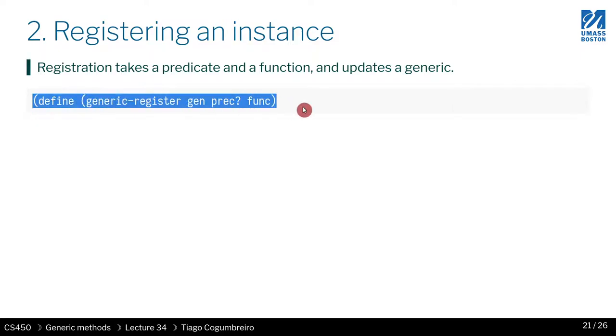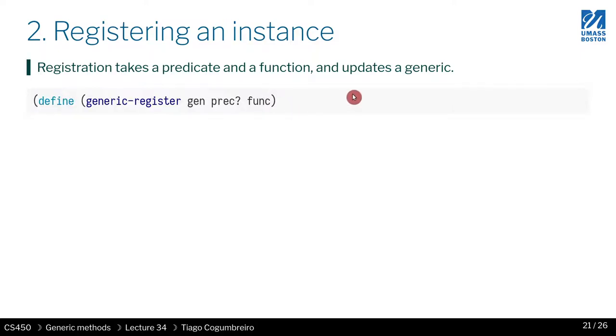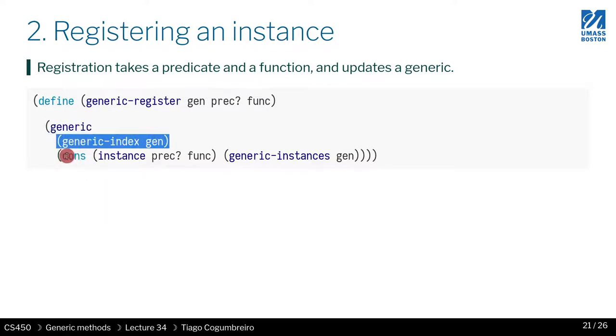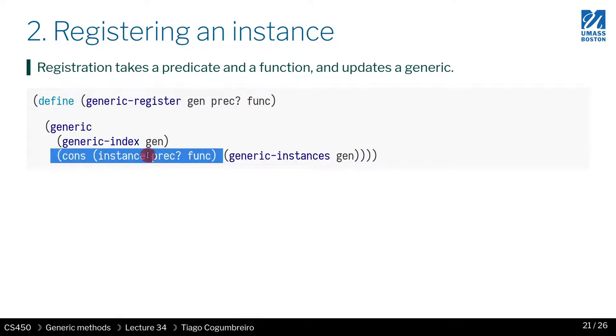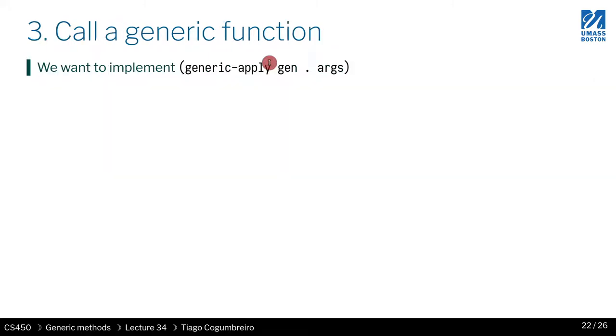Next thing we want to do is we want to define registration. So how do we do it? Well, we have one of these generic objects. And what we want to register is the predicate and the function, the current implementation. So, it becomes very simple. How do we update the generic? We create a new one that uses the same index and takes the current instances and we add cons of a new instance, which is that structure that we just defined. So pretty easy to register.